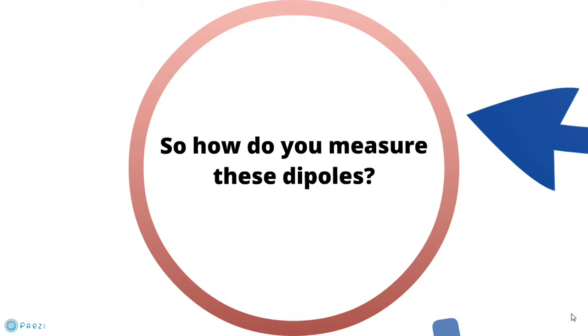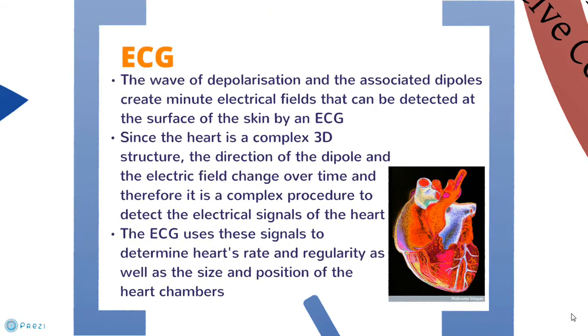So how do you measure these dipoles? The wave of depolarization and associated dipoles create mini electrical fields that can be detected at the surface of the skin by an ECG. However, since the heart is a complex 3D structure, the direction of the dipole and the electrical field change over time.